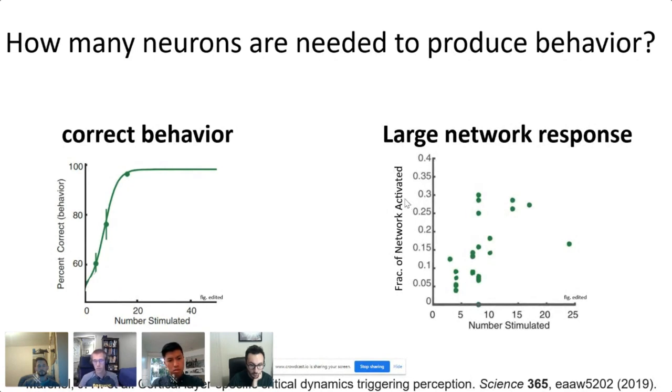To answer that question we can look at the fraction of neurons in the network that are co-activated with our stimulated neurons. We find that a large fraction up to like 0.3 of the neurons that we're looking at are activated along with the neurons that we stimulate. The network size that we're looking at here is around 5,000 neurons, so 0.3 of those is a lot. Ultimately we have an amplification of around a hundred times going on here.